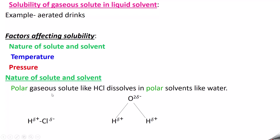If you take a polar solute, it will be dissolved in polar solvents. By polar we mean ionic separation. Take the example of hydrogen chloride gas — hydrogen and chlorine share an electron to form a covalent bond, but the shared pair of electrons is attracted towards chlorine due to its high electronegative character, giving a partial negative charge on chlorine and partial positive charge on hydrogen. Since there is ionic separation, it is taken as a polar compound, and this polar compound dissolves in polar solvents like water.